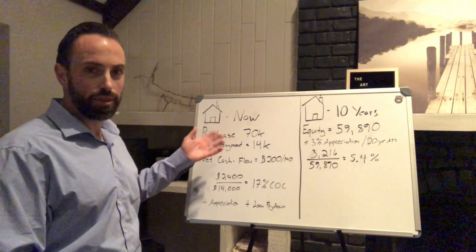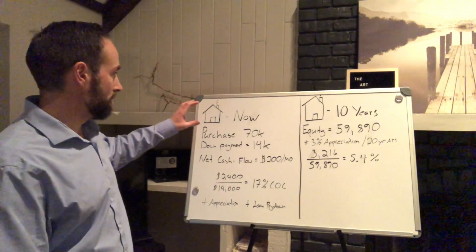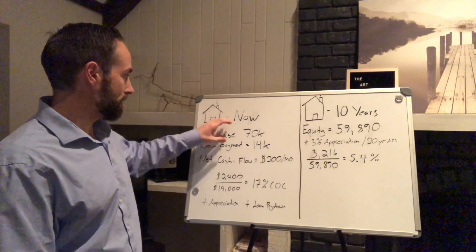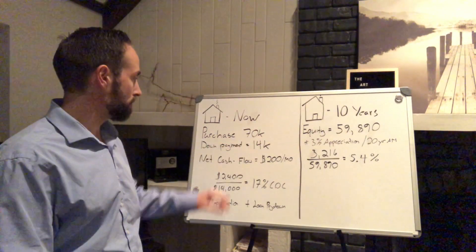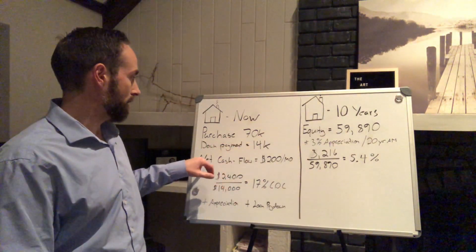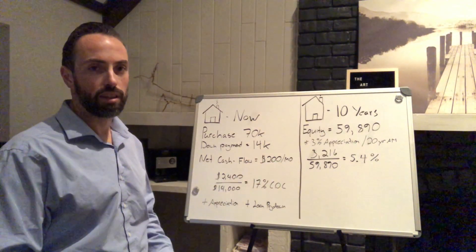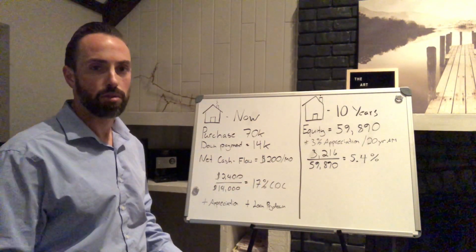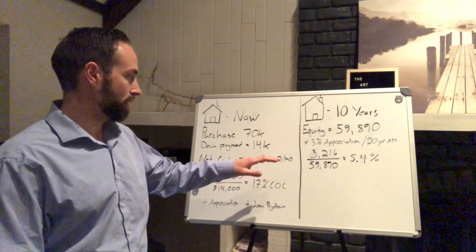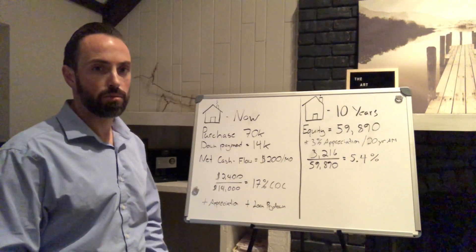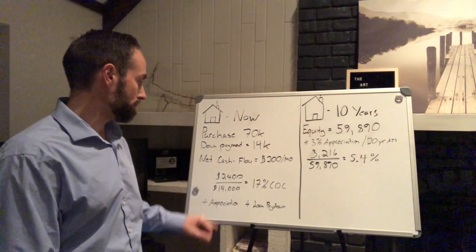I'm going to use an example with typical numbers for a house that I would buy here in Kansas City. We're going to buy a $70,000 house. On a typical investment loan you put down 20%, so that is $14,000. Typical numbers I see are about $200 a month net cash flow — and that's after all your expenses: property manager, vacancy, maintenance, CapEx, all that kind of stuff.